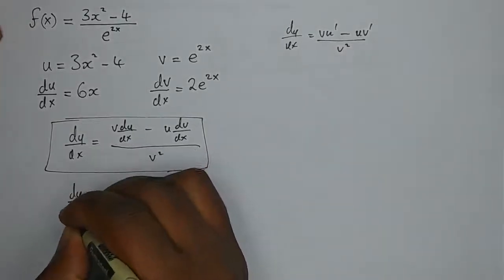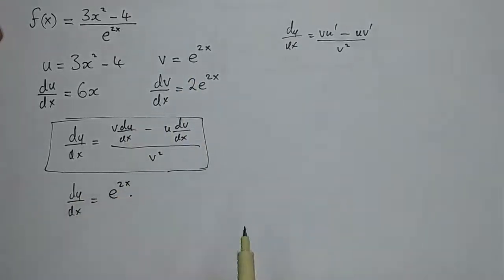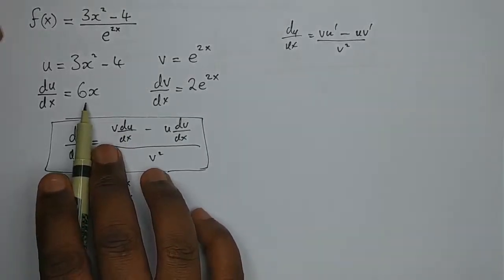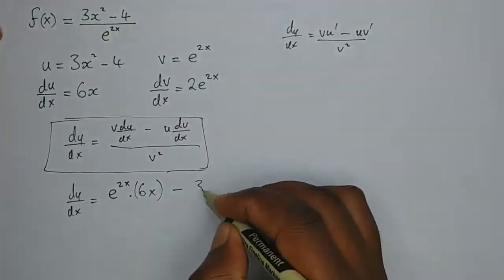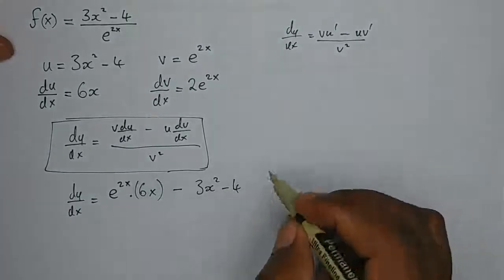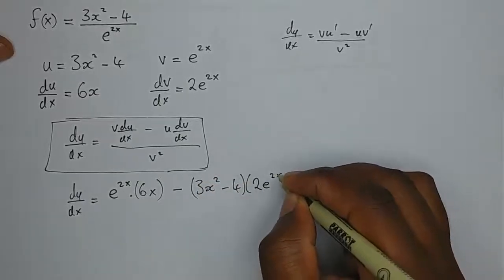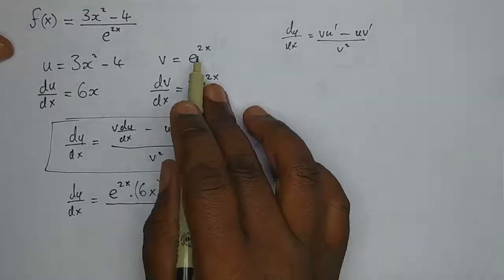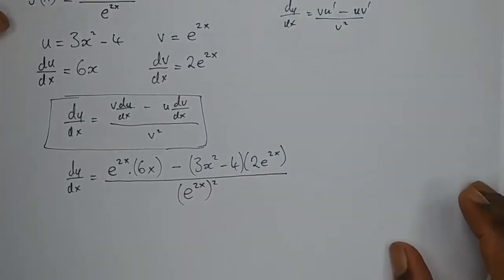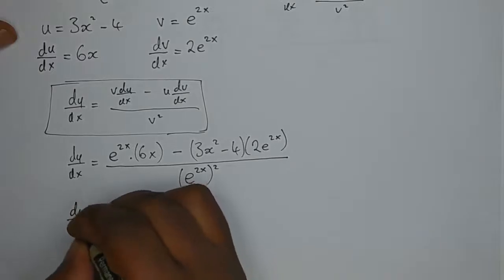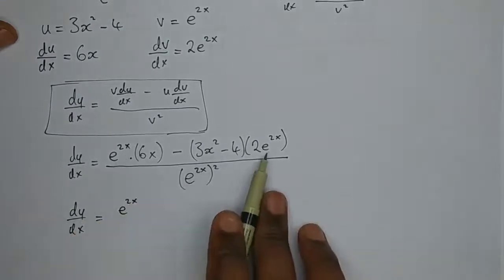Now it's just a matter of replacing. Our dy/dx will equal v, which is e to the power 2x, multiplied by our du/dx which is 6x — let's put that in brackets — minus our u which is 3x squared minus 4, and our dv/dx in brackets is 2e to the power 2x. Everything is over v squared, which is e to the power 2x all squared.